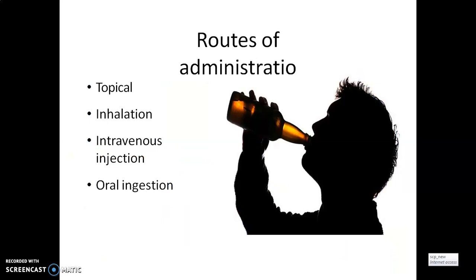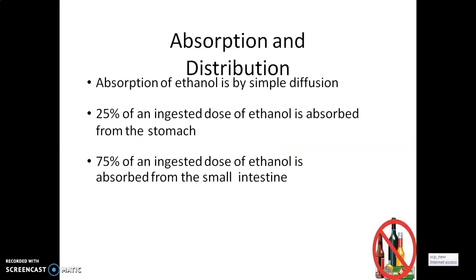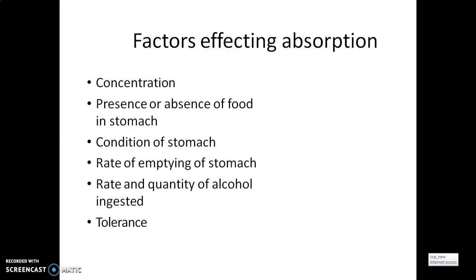Coming to the route of administration, alcohol can be administered either topically, by inhalation, intravenous injection, or oral ingestion. Regarding absorption and distribution: absorption of ethanol is by chemical diffusion. 25% of ingested dose of ethanol is absorbed from the stomach. 75% of the alcohol will be absorbed from the small intestine. Factors affecting absorption include concentration gradient, presence of food in the stomach, health status of the stomach, rate of emptying of the stomach, rate and quantity of alcohol ingested, and also tolerance, which differs with different people.